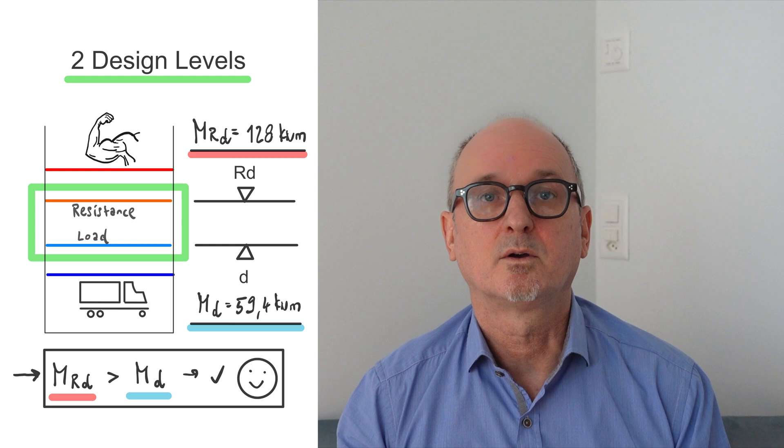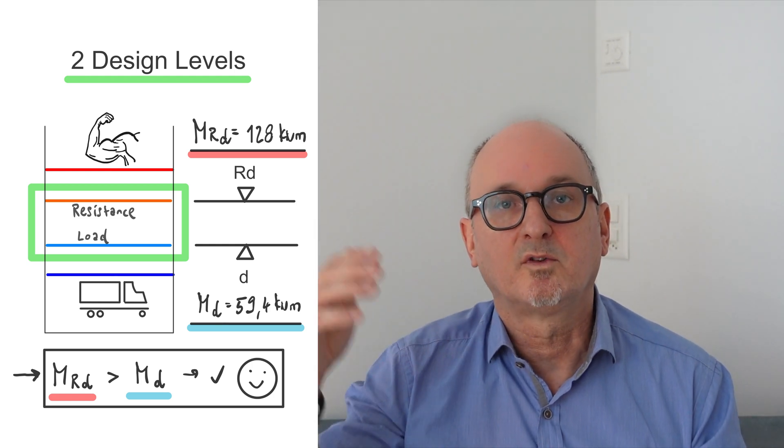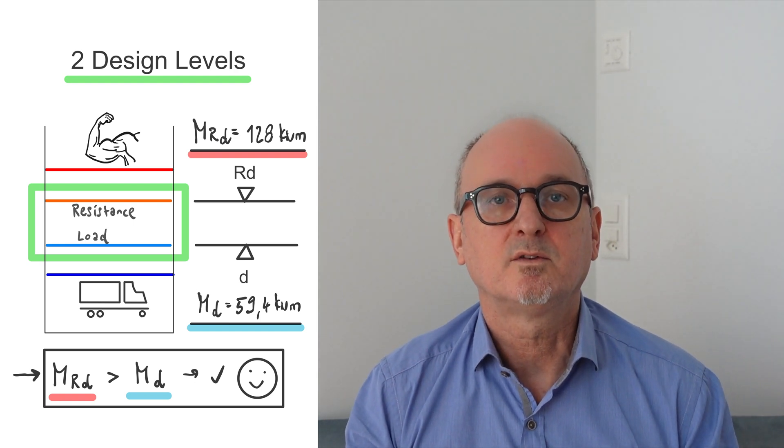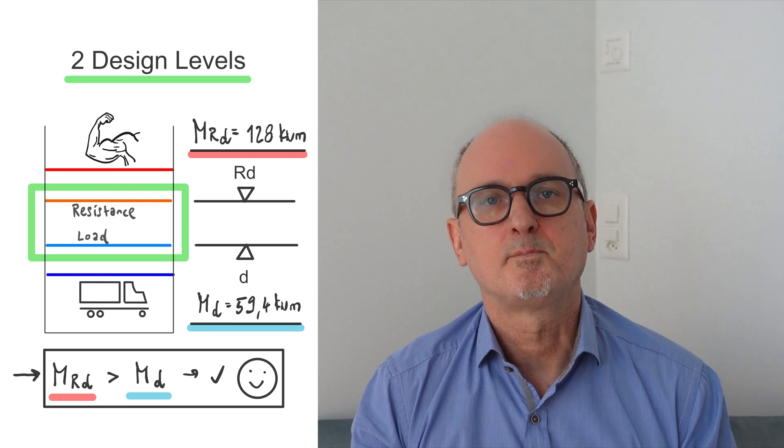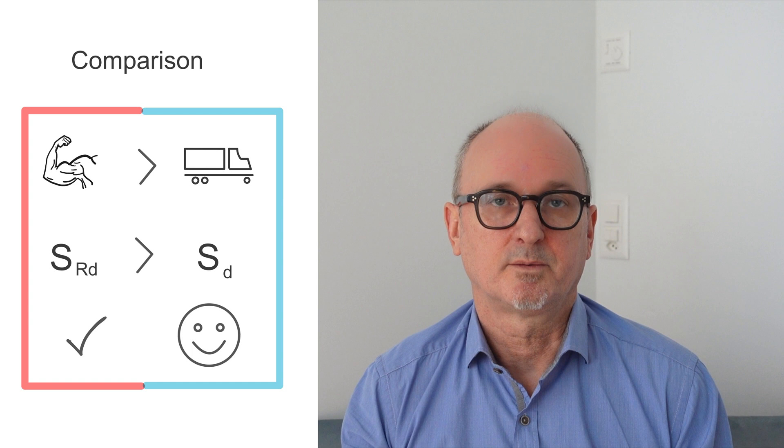So now you can see that the resisting design moment is bigger than the design moment from the load side. So concerning bending resistance, we now can say the structure is safe. Looking at these numbers we could even try to downsize the girder. But be aware that you always have to check several items of a construction. In this example you would certainly have to check the shear resistance and the deformations as well. Only then the structural design will complete. But these checks also work after the same concept of the design levels.